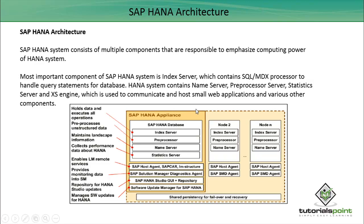The first node has its own index server, preprocessor, name server, and statistic server. Similarly, node 2 has all these components, and we can have N number of nodes. This is a typical distributed architecture. The most important component of SAP HANA is the index server.